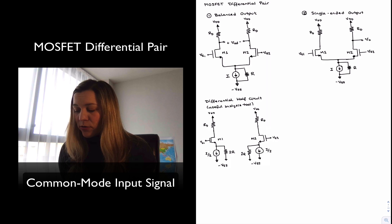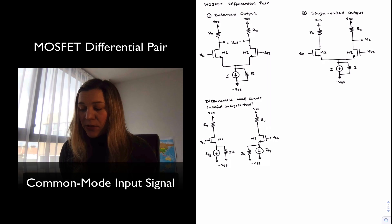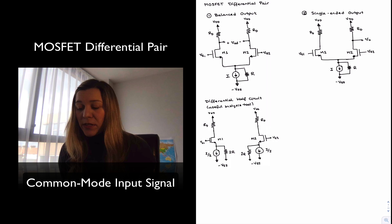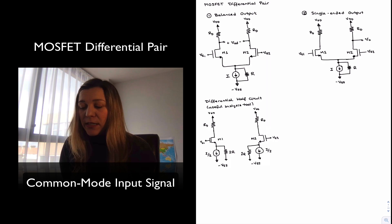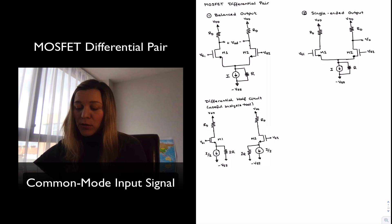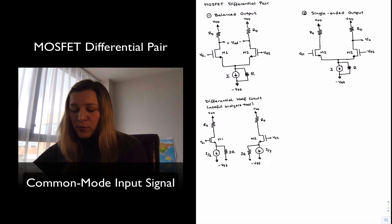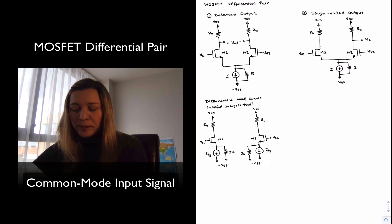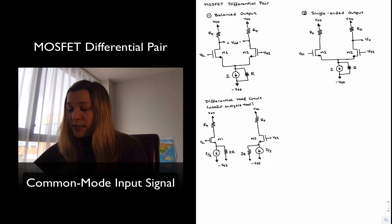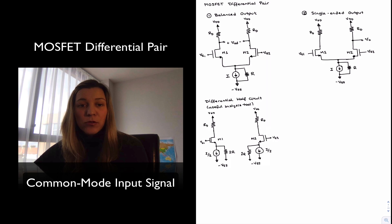The output can be taken either differentially or single-ended. When it's taken differentially, we call that a differential output or a balanced output, represented in my first drawing labeled one — balanced output. VOD, or the differential output voltage, is essentially the drain voltage of M1 minus the drain voltage of M2, so differentially across the drains. In the single-ended output case, the exact same circuit is used except the output is taken at the drain of transistor M2.